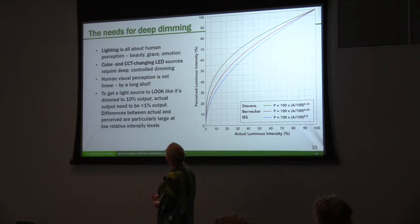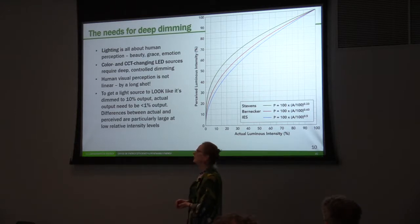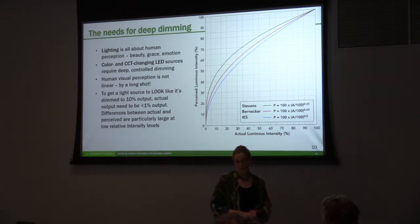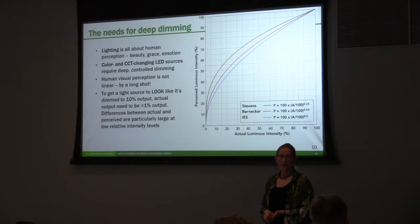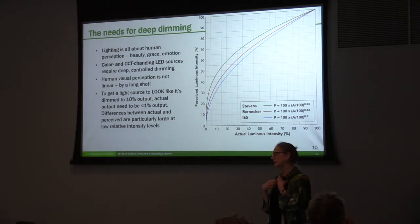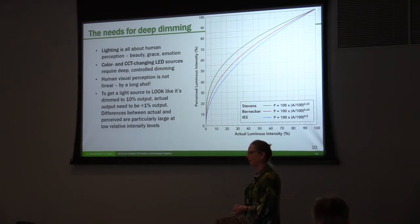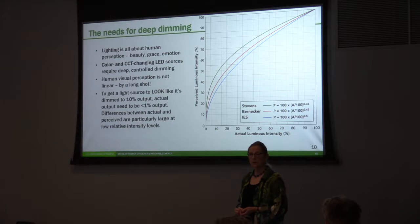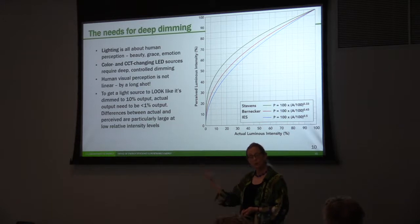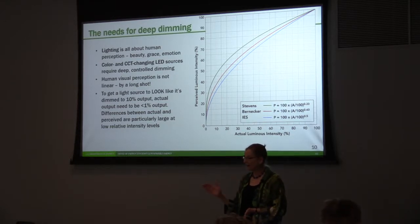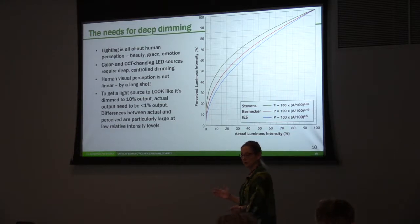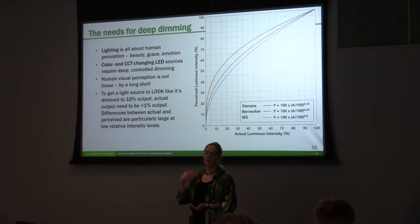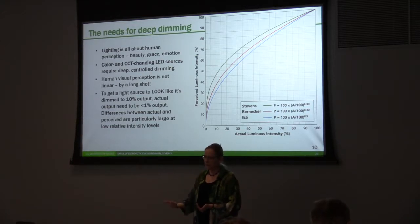Here are three different equations for that phenomenon, looking at brightness depending on the depth of dimming. To get a light source to look like it's dimmed to 10% output, you actually need to dim it down to 1% output. So if we're designing a conference room and say 10% dimming is fine — no, it's not, because 10% dimming looks like it's more like 30% or 40% dimming. If you want it to look like 10% of the light, you have to dim down to 1%.